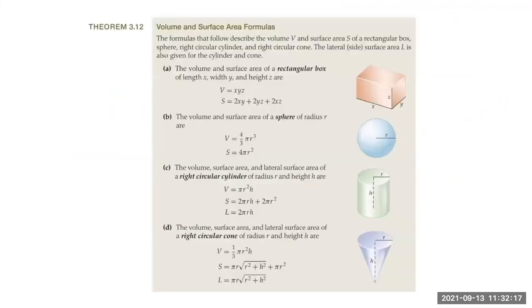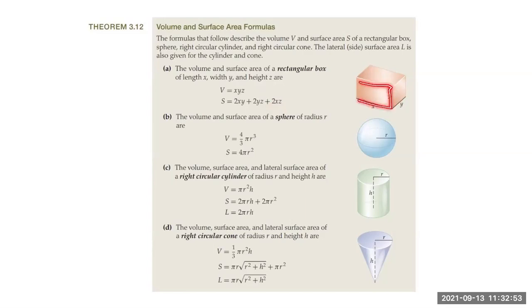Next we have a theorem giving formulas for volumes and surface areas. For a rectangular box with length x, width y, and height z, the volume is xyz, and the surface area is 2xy + 2yz + 2xz. That's because each pair of opposite faces contributes a factor of 2 to the total surface area.